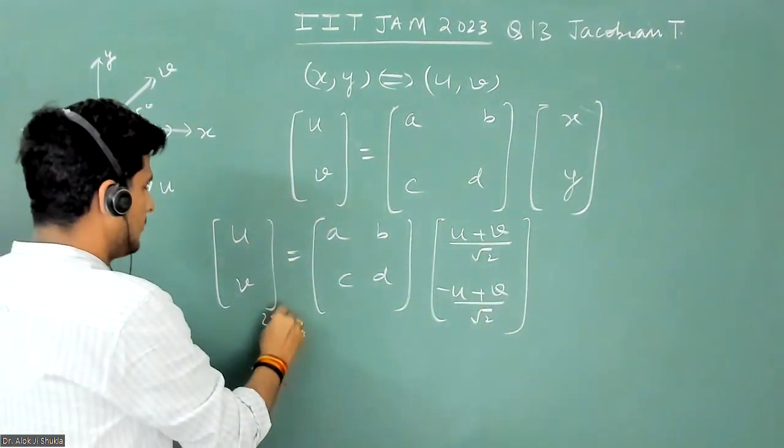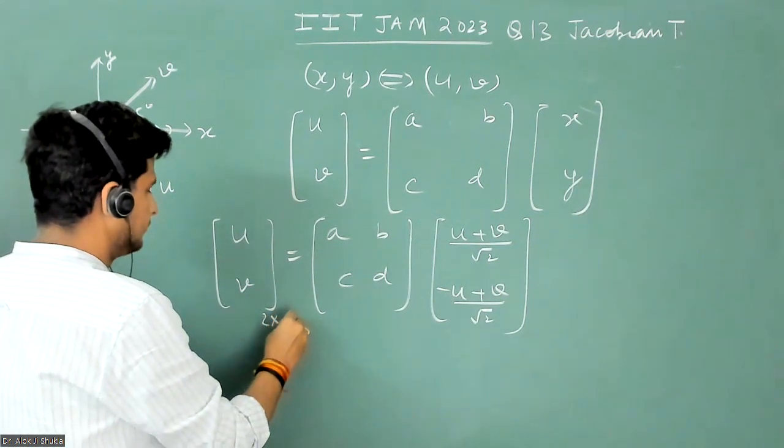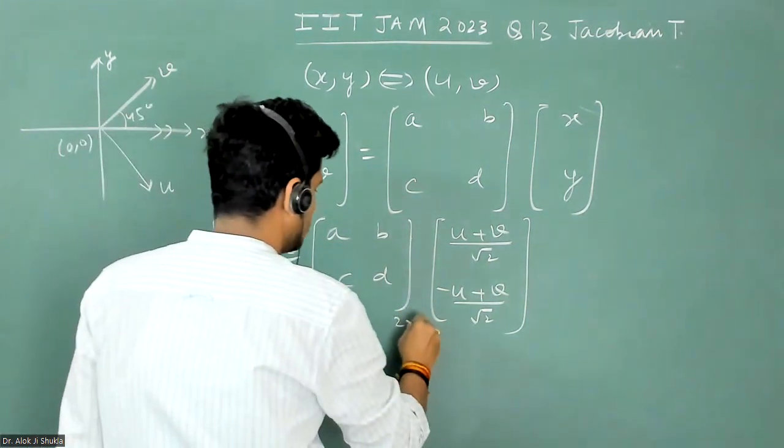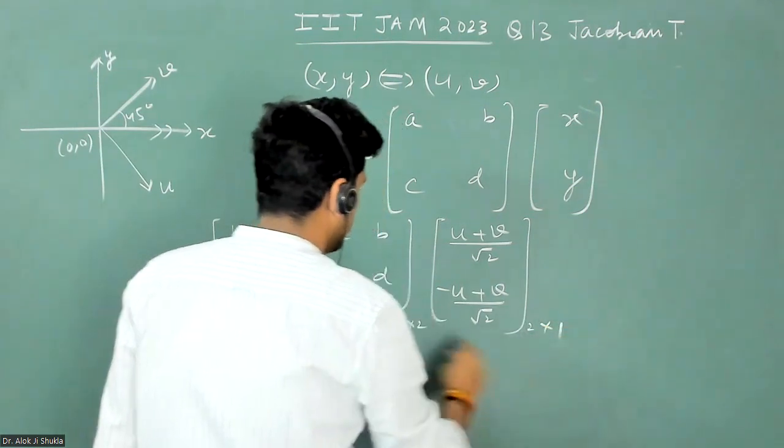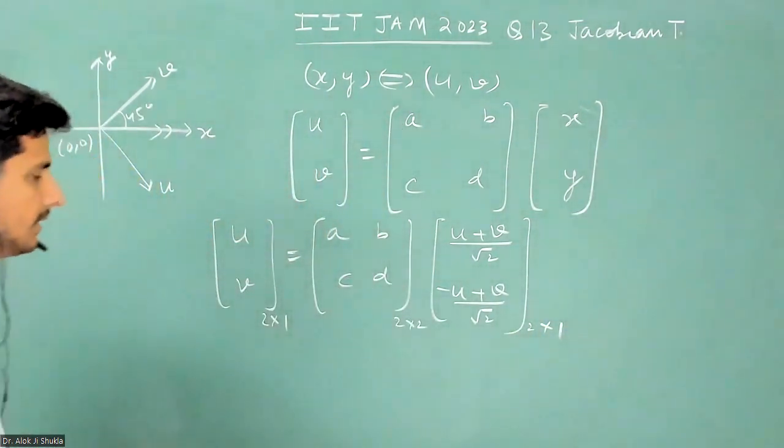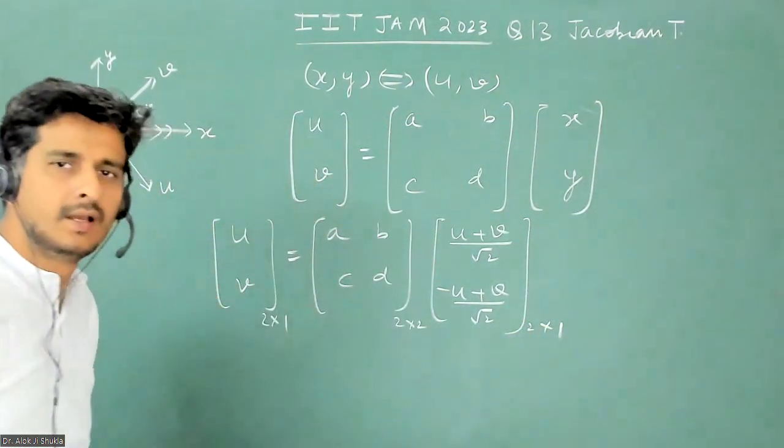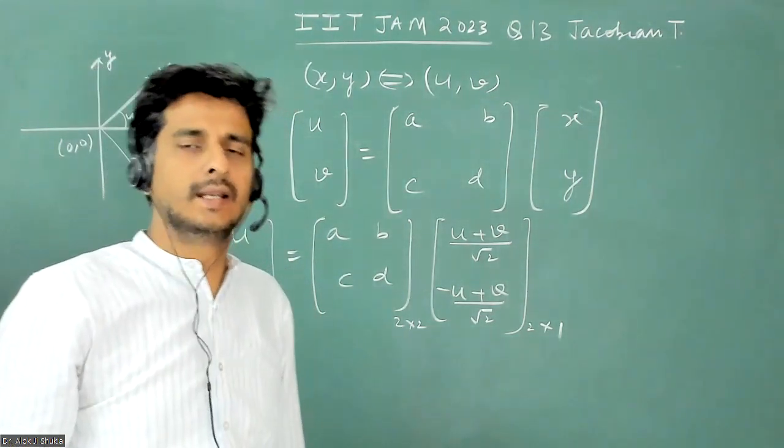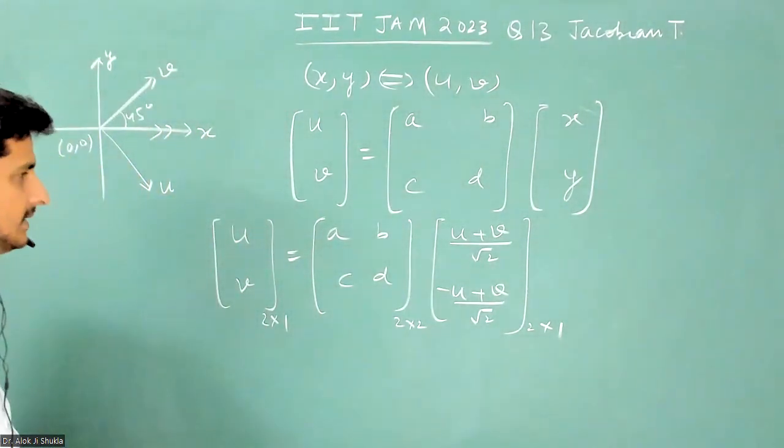So now this is two cross two, this is two cross one, this is two cross two, and this is two cross one. When I multiply these two, I will get again two cross one, and then I will compare the terms and get the value of A, B, C, D.